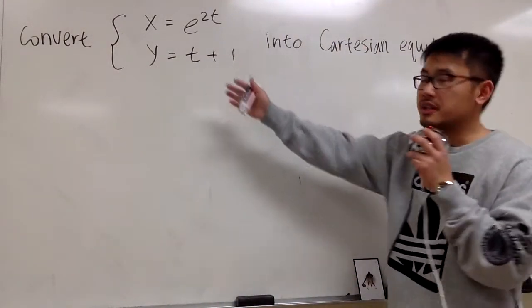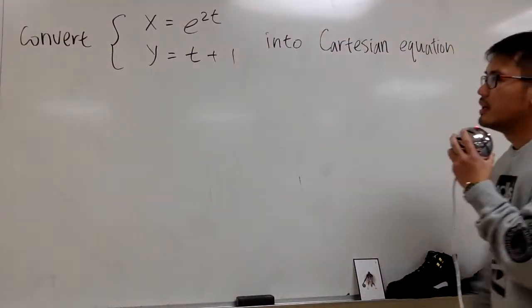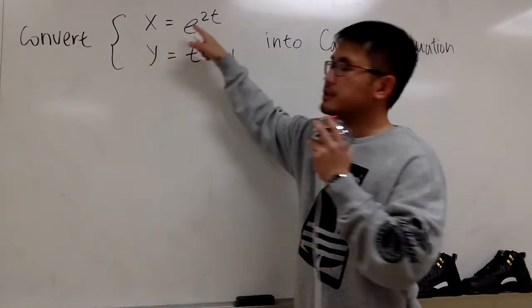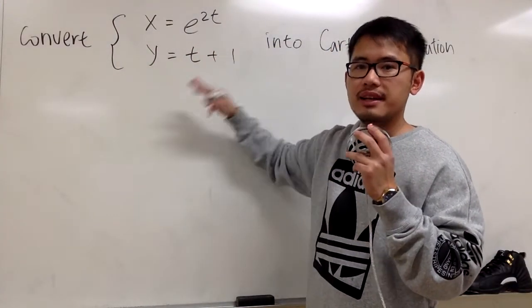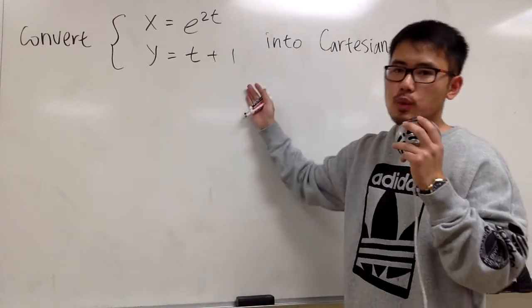Okay, we'll change this parametric equation into Cartesian equation. Here we have x equals to e to the 2t, and on the other hand, we have y is equal to t plus 1.